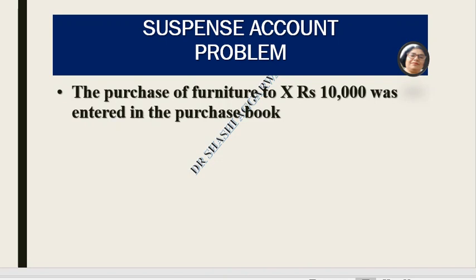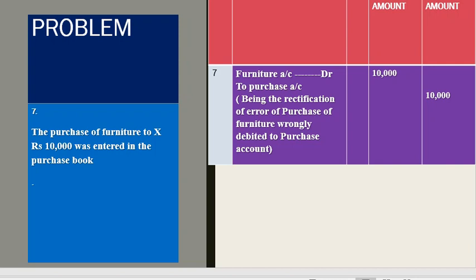For Error 7: The purchase of furniture from X for Rs. 10,000 was entered in the purchase book. This is an error of principle — furniture is a capital item and should have been debited to the furniture account, not the purchase account. No suspense account is needed here since this error does not affect the trial balance agreement. To rectify: debit the furniture account and credit the purchase account by Rs. 10,000.